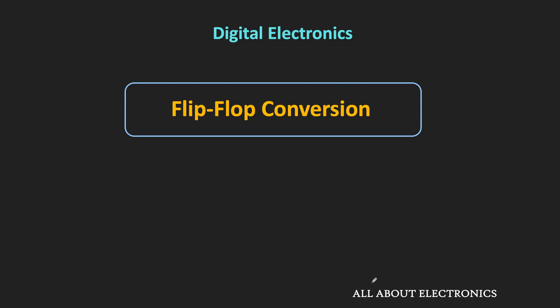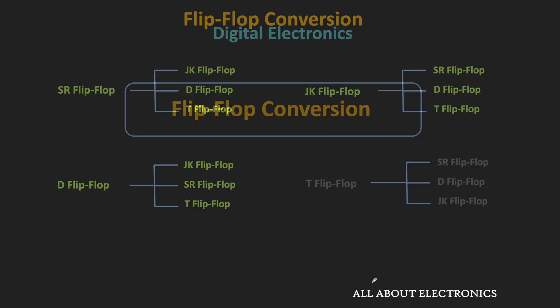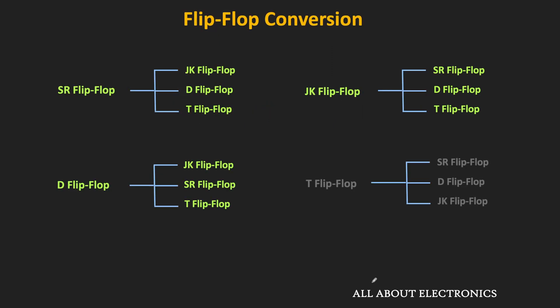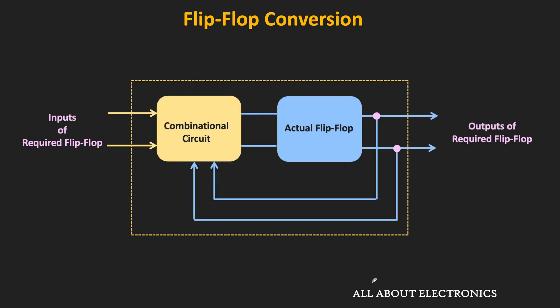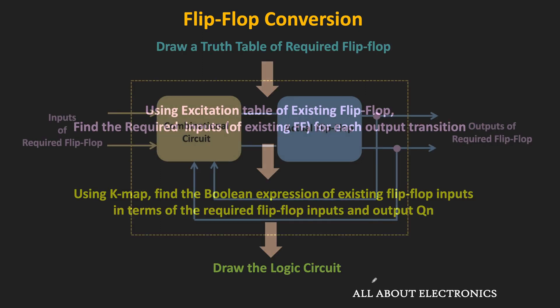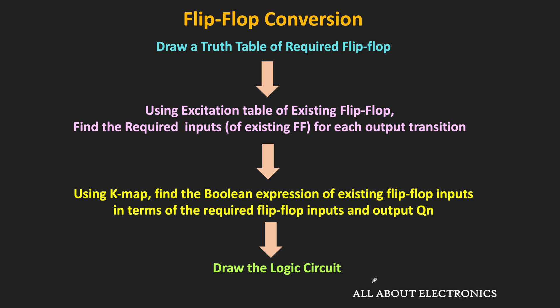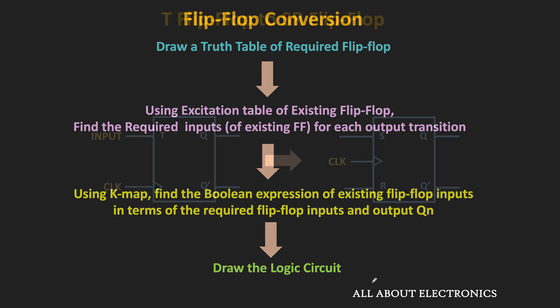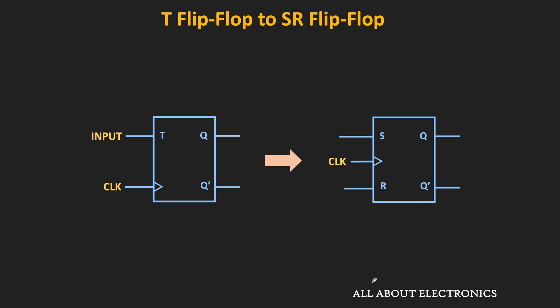Hey friends, welcome to the YouTube channel all about electronics. So in the fourth part of this flip-flop conversion series, we will see how to convert the T flip-flop into the SR as well as the JK flip-flop. As we have seen in earlier parts, to convert one flip-flop into another, we need to design an additional combinational circuit connected between the inputs of the required flip-flop and the actual flip-flop. Now by following the same steps, let us see how to convert the T flip-flop into the SR flip-flop.